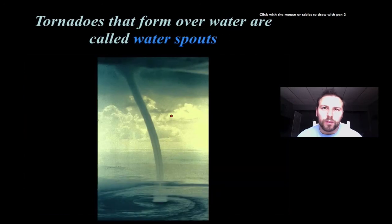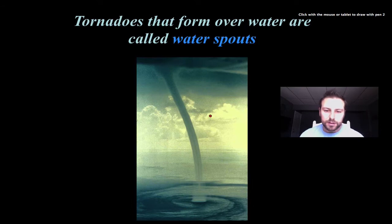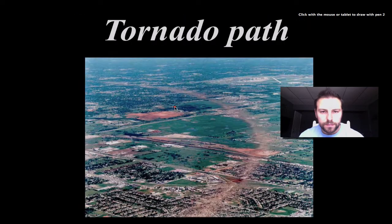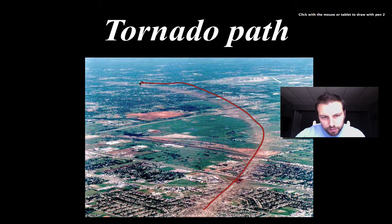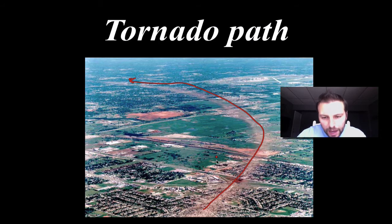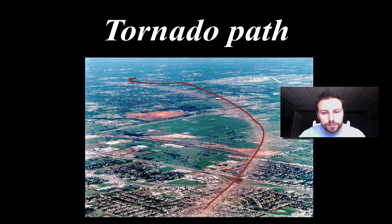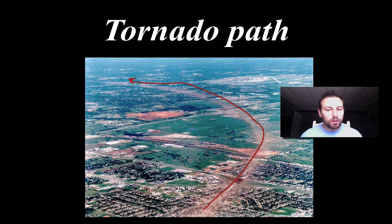Tornadoes that form over water are known as waterspouts — you can see one drawing up water here. This right here is a tornado path, and you can actually trace the path as it moves through. Notice how tornadoes can change directions locally and relatively quickly — everything over here is okay, path of destruction, then everything's fine over there. Tornadoes are unpredictable; we don't know when they're going to happen, and they cause very localized damage, unlike hurricanes which cause town-wide, city-wide, or even statewide damage.